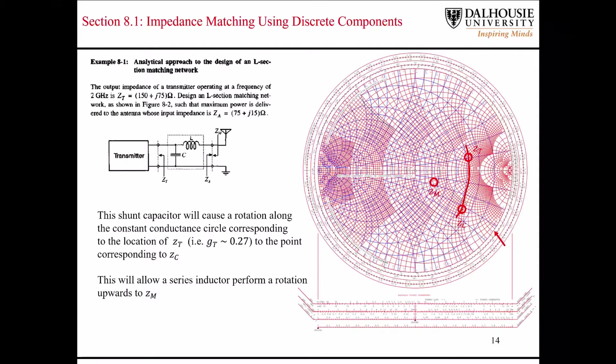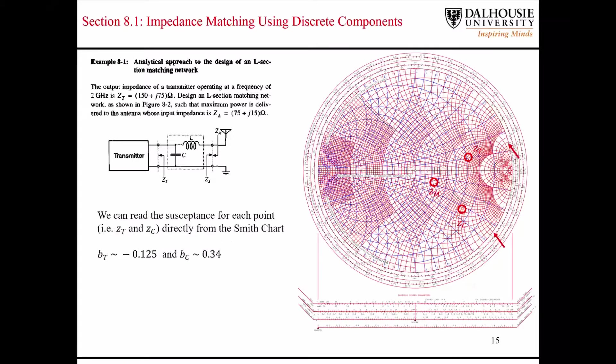I extend the point Zt up to here, and I extend the point Zc down to here. And I read these two admittance values directly off of the Smith chart. The susceptance corresponding to the point Zt is negative 0.125, and the susceptance corresponding to the point Zc is 0.34.